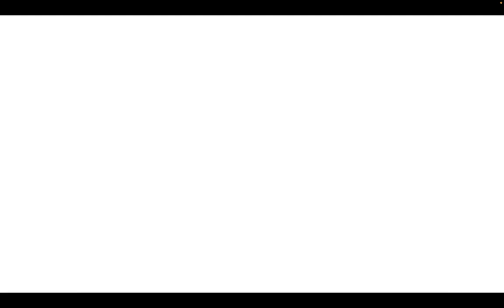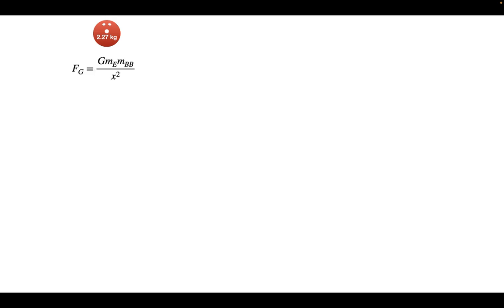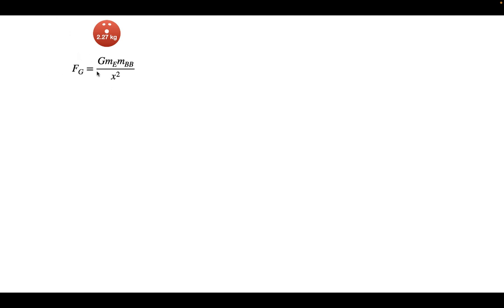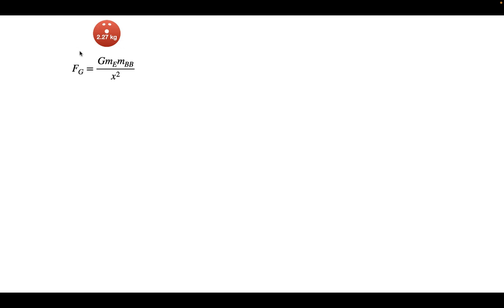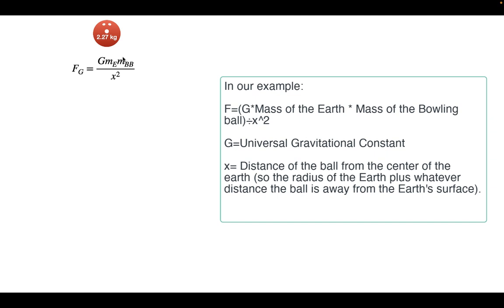Let's start by examining the bowling ball, which is 2.27 kilograms. To determine which object reaches the ground first, we need to find the acceleration of both objects. We'll use Newton's law of gravitation, which states that the force of gravity between two bodies equals the gravitational constant times the mass of body one times the mass of body two divided by the distance squared. For the bowling ball, the gravitational force equals big G times the mass of the earth times the mass of the bowling ball, divided by x squared.